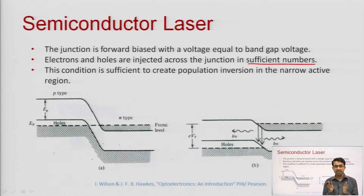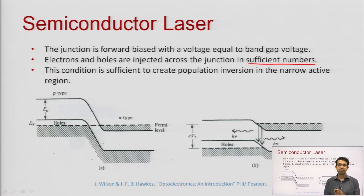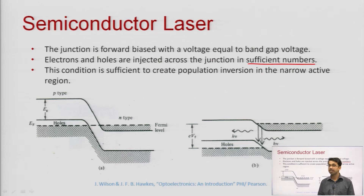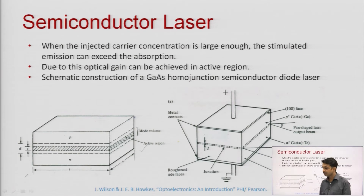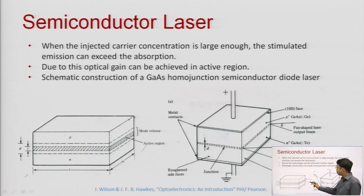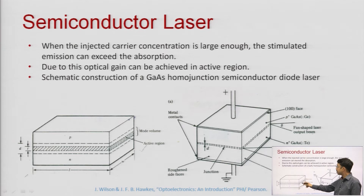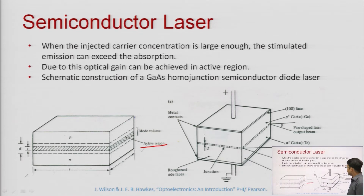If we do not apply any forward bias, no electrons and holes can combine. As soon as we apply forward bias, electrons from n-type material and holes from p-type material enter the junction region, and as soon as they enter, electrons and holes recombine and emit photons of energy hν. This energy hν equals the band gap energy. The junction is forward biased with a voltage equal to the band gap voltage.